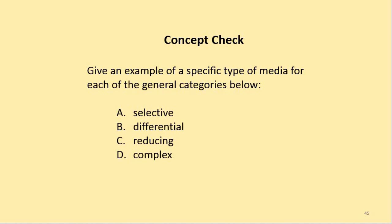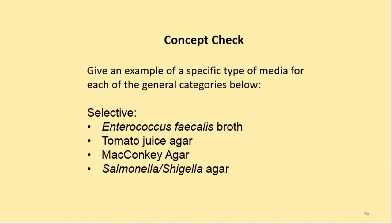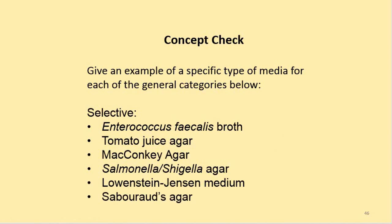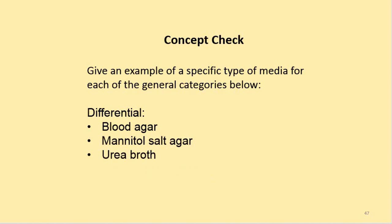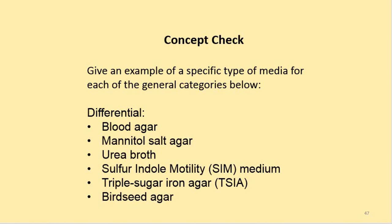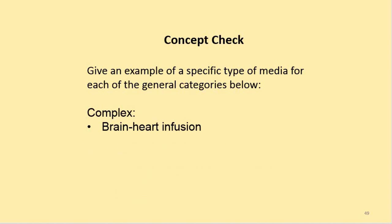Examples of specific media types: for selective media — enterococcus faecalis broth, tomato juice agar, MacConkey agar, Salmonella-Shigella agar, Löwenstein-Jensen medium, or Sabouraud's agar. For differential media — blood agar, mannitol salt agar, urea broth, sulfur indole motility medium, triple sugar iron agar, or birdseed agar. For reducing media — thioglycolate broth or agar, cystine reducing medium for anaerobic bacteria. For complex media — brain heart infusion or trypticase soy agar.